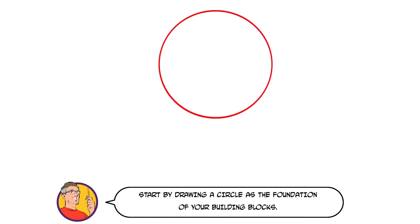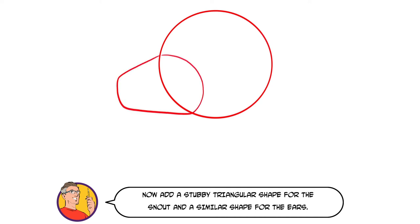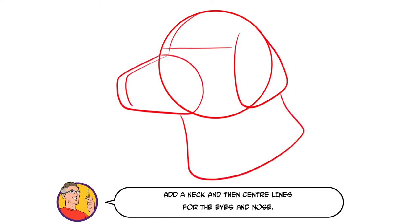Start by drawing a circle as the foundation of your building blocks. Now add a stubby triangular shape for the snout and a similar shape for the ears. Add a neck and then centre lines for the eyes and the nose.